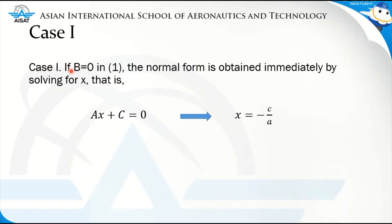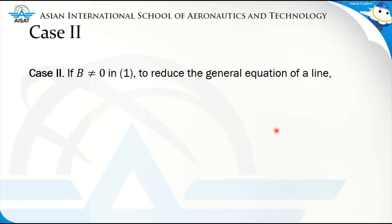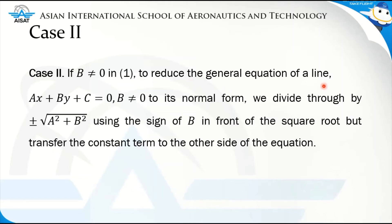For case one, if b is equal to zero in our general form, the normal form is obtained by immediately solving for x. So if you have ax plus c is equal to zero, solving for x we get x is equal to negative c over a. For case two, if b is not equal to zero, to reduce the general equation into its normal form we divide through by positive or negative square root of a squared plus b squared, using the sign of b in front of the square root, after transferring the constant term to the other side.